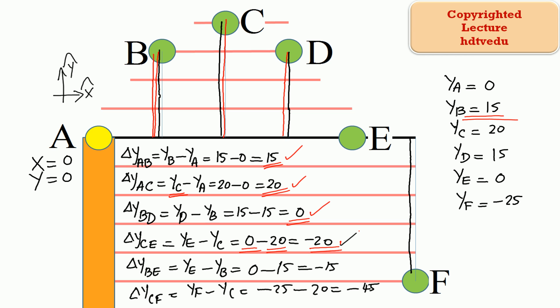What is the vertical displacement between points B and E? Final minus initial: vertical position of E minus vertical position of B. We expect it to be negative because point E is below point B. Vertical position of E is 0; vertical position of B is 5, 10, 15. So it is 0 minus 15, which is negative 15.